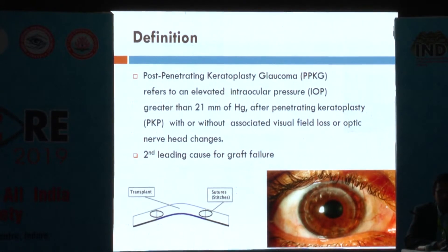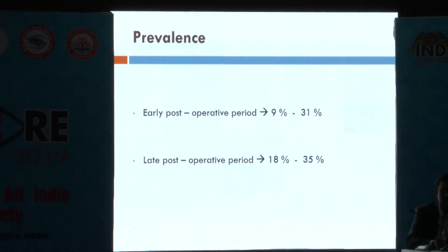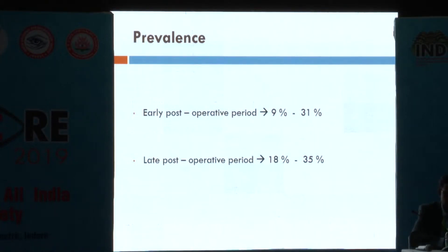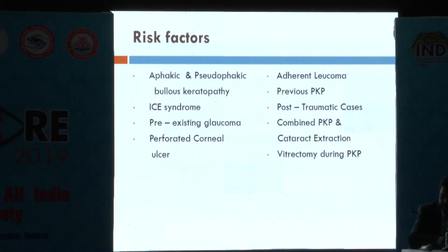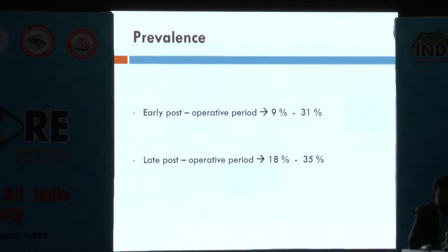It is the second leading cause of graft failure next to graft rejection. Irwin and Kaufman were the first to note post penetrating keratoplasty glaucoma. The prevalence and incidence differs in different studies — in the early post-operative period the incidence rate is around 9 to 31%, and in the late post-operative period it is around 18 to 35%.